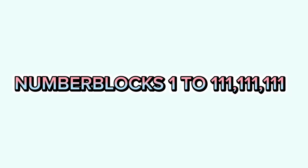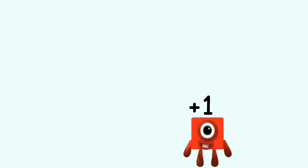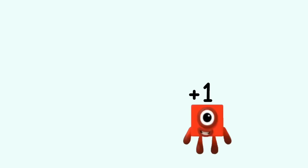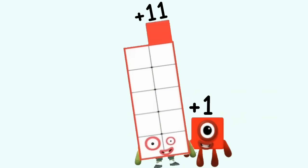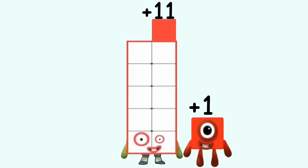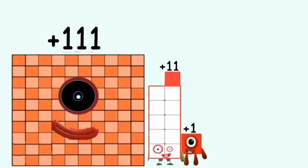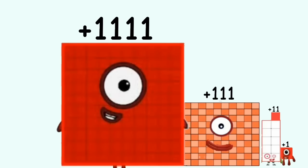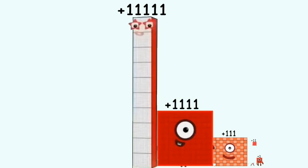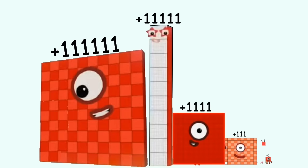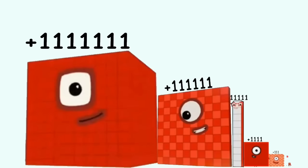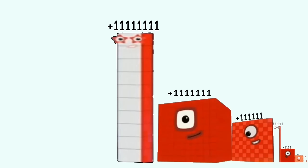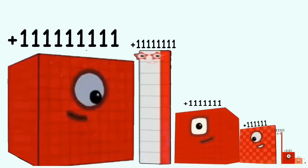Number blocks: 1 to 111,111,111. Positive 1, positive 11, positive 111, positive 1,111, positive 11,111, positive 111,111, positive 1,111,111, positive 11,111,111, positive 111,111,111.